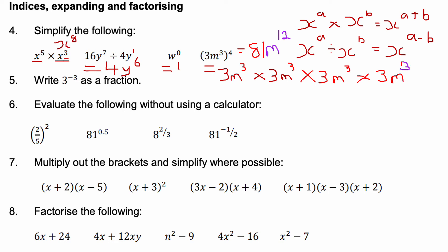Question five: write 3 to the minus 3 as a fraction. A negative index means I do 1 over 3 to the power of 3. Three cubed is 27, so the answer is 1 over 27.